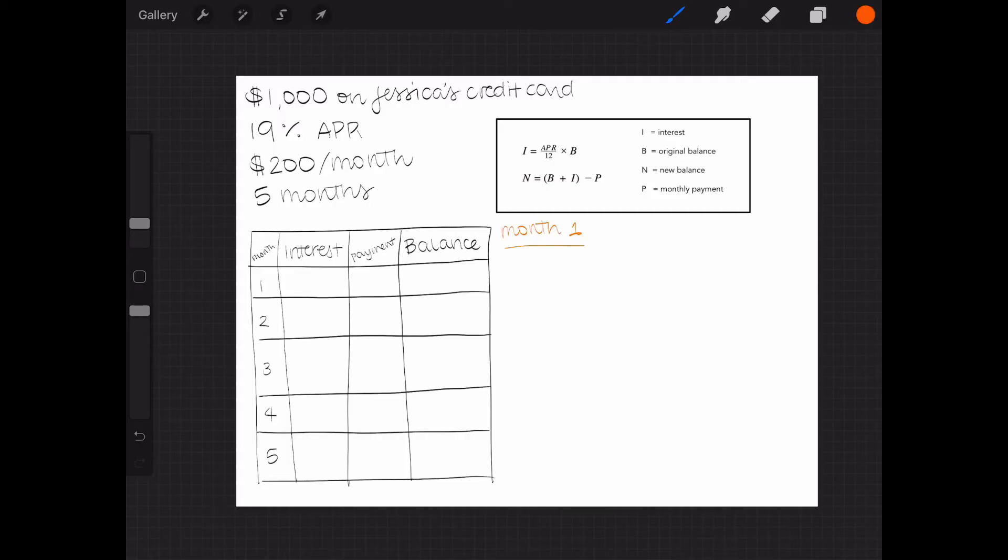To calculate interest for the first month, let's use the first formula. 19% APR as a decimal is 0.19, then divided by 12 to get a monthly rate equals 0.0158. The monthly rate of 0.0158 times the original balance of 1,000 equals $15.83.